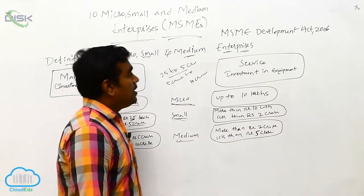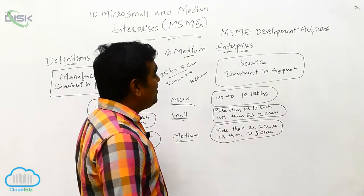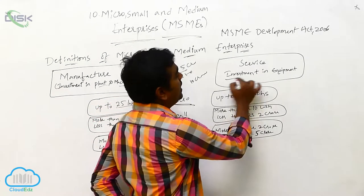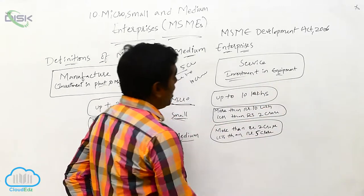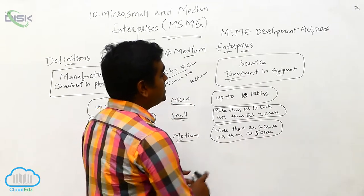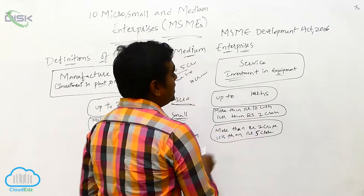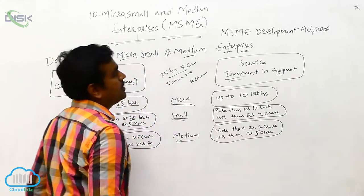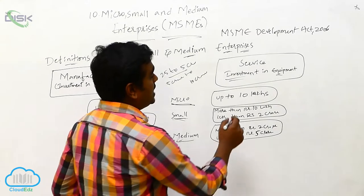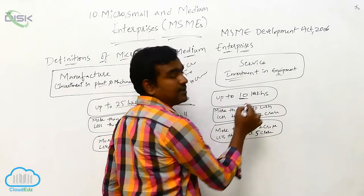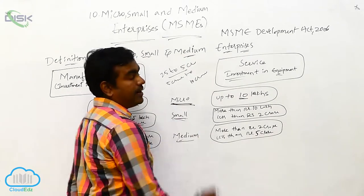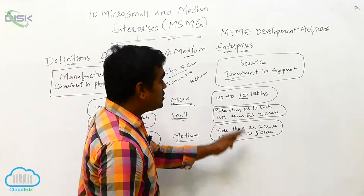In the service industry, micro enterprises are those where the investment in equipment is up to 10 lakhs. If we invest up to 10 lakhs in equipment, it is regarded as a micro enterprise in the service industry.